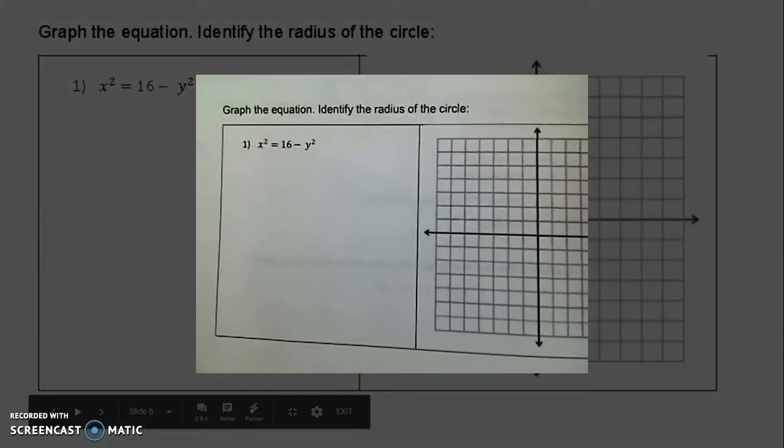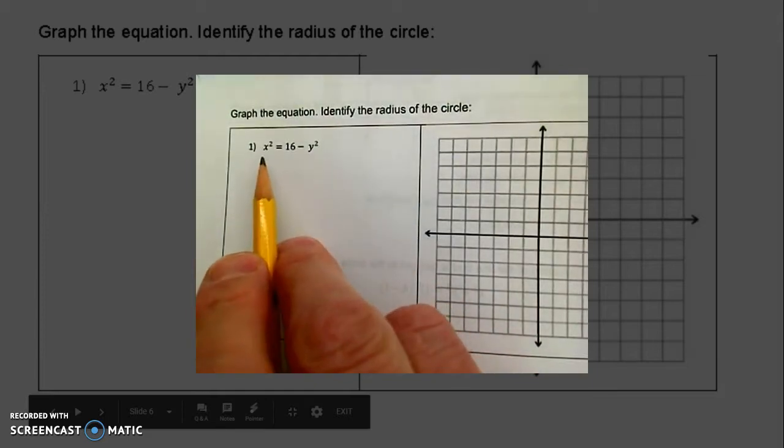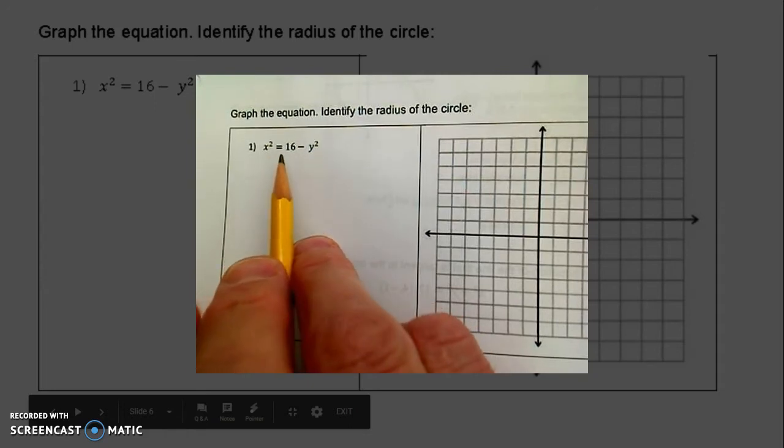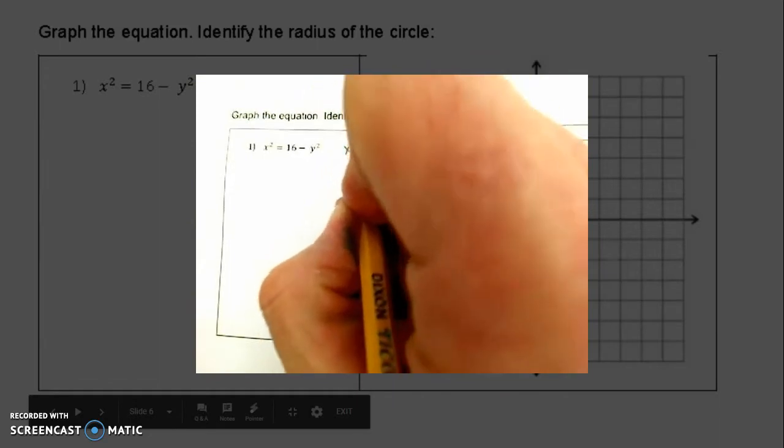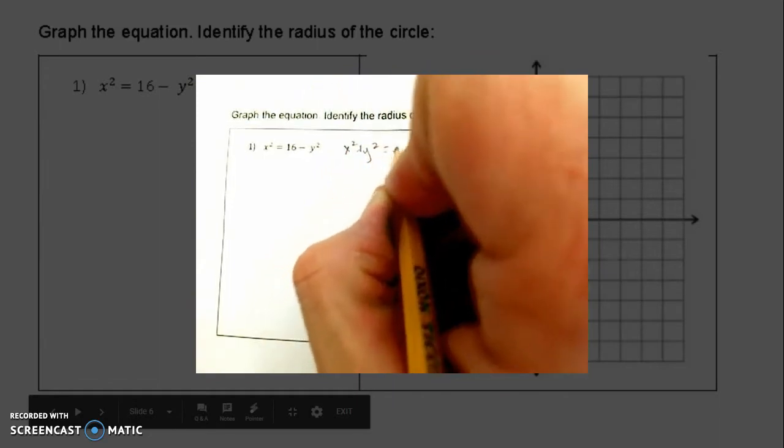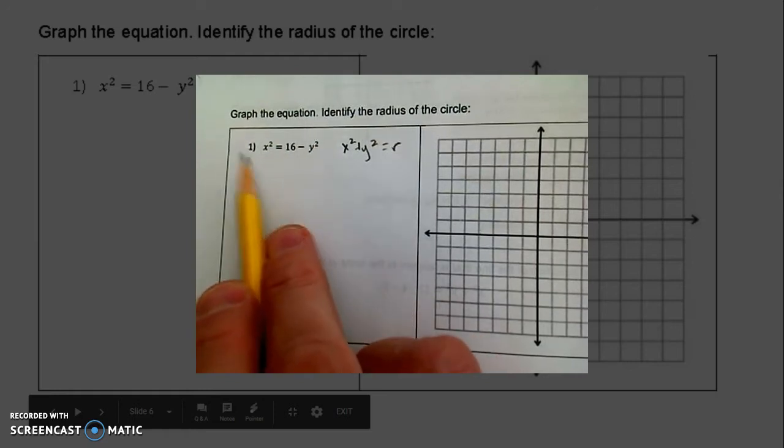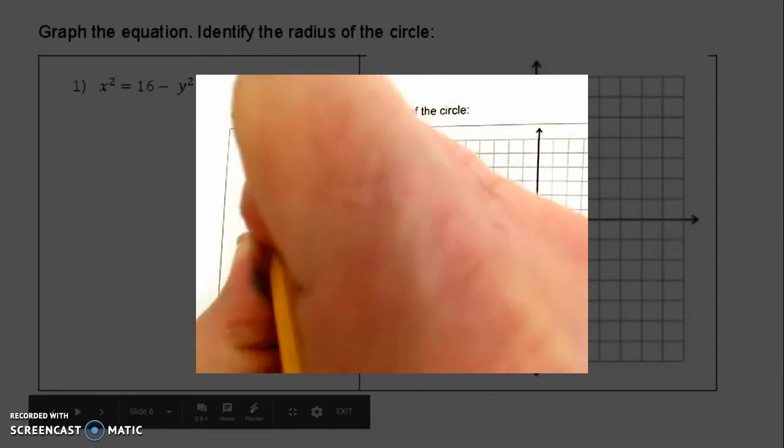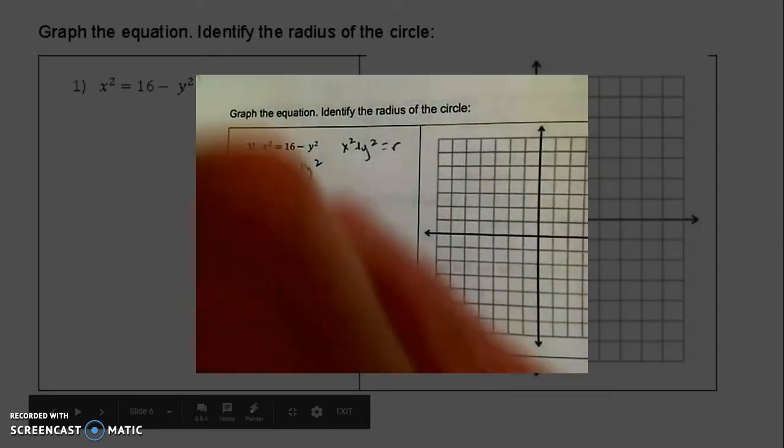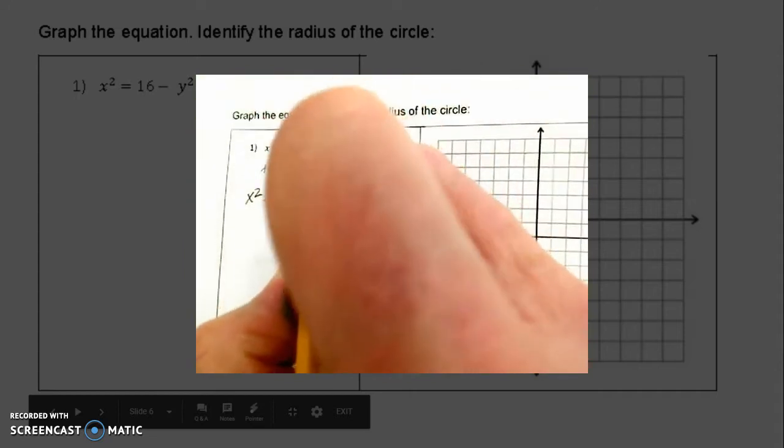Our job is to graph the equation and then identify the radius of the circle. The first thing we need to do is make sure that this equation is in standard form. It should read x² + y² = r². Right now, I have x² = something. I need to get this y² over to the left-hand side, so I'm going to add y² to both sides. Now x² + y² = 16.